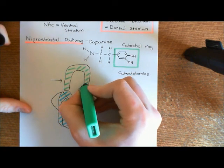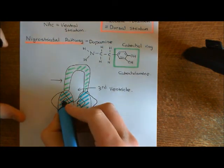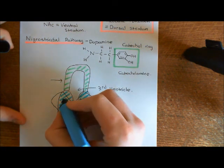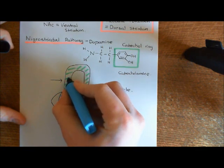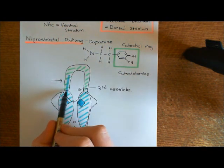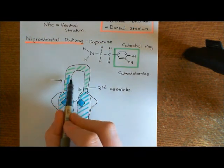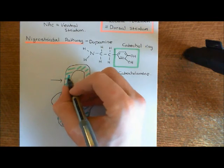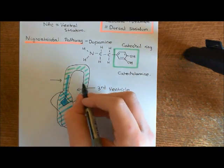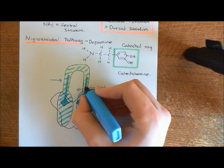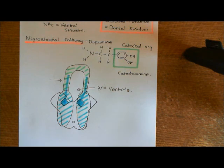Back to the nigrostriatal pathway. The dopaminergic neurons, which have their cell bodies in the substantia nigra pars compacta, are going to send their axons into a bundle running through the hypothalamus. You would only ever say you have one hypothalamus, though people do talk about the left side and right side of the hypothalamus, as they are effectively symmetrical. Running through both sides of the hypothalamus is a bundle of axons, some of which come from the dopaminergic neurons in the substantia nigra pars compacta.